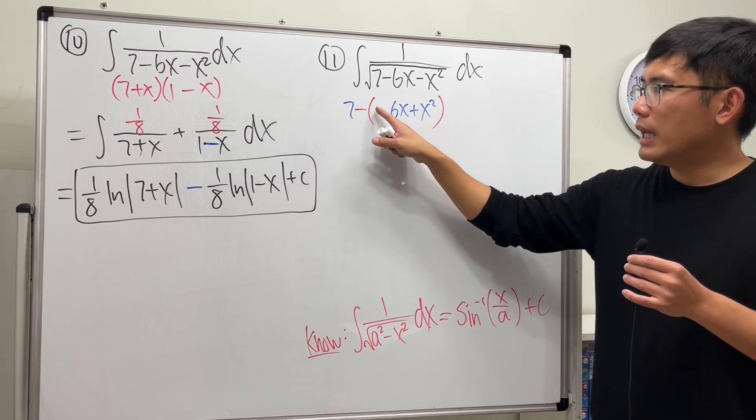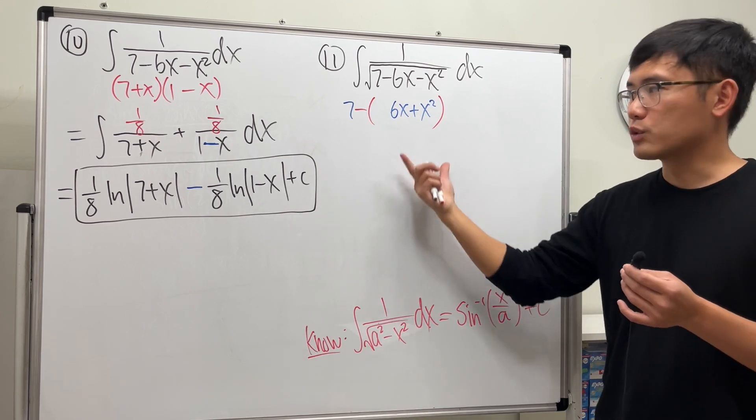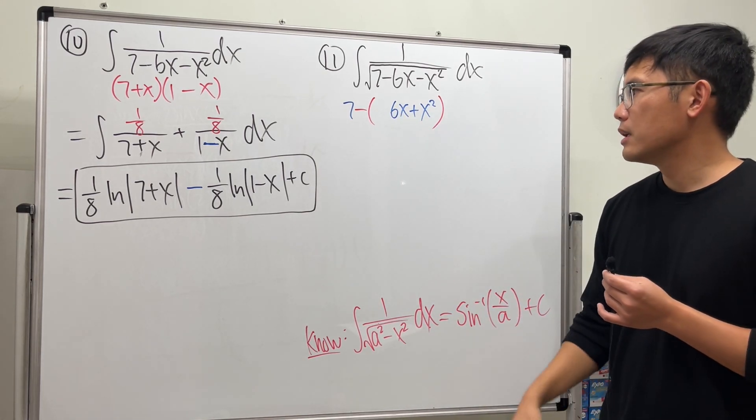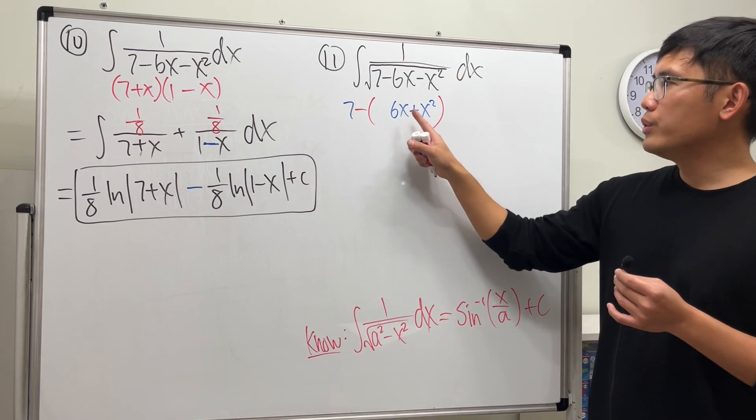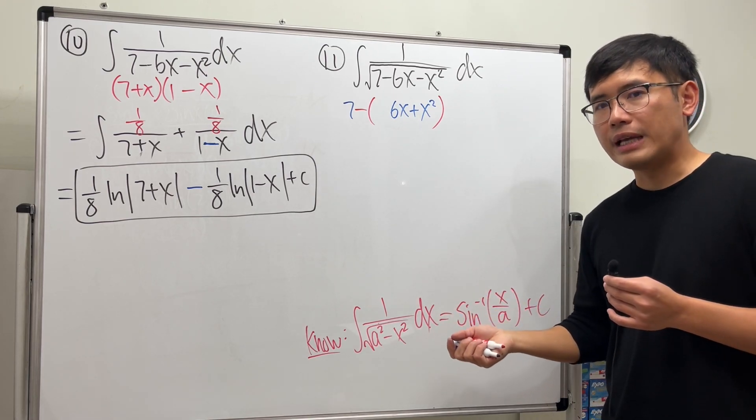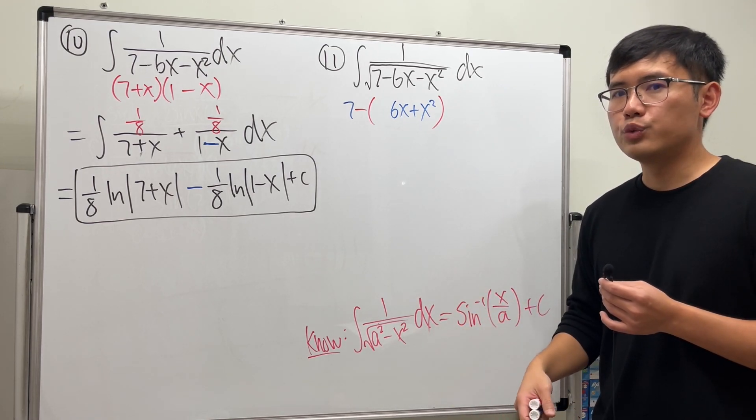When we have this, we just have to add some number here, then we can complete the square for that. Don't forget to undo that little part. To figure out this number, we look at the coefficient of x, which we have 6. We take half of that, which is 3, and we square that, which we get 9.